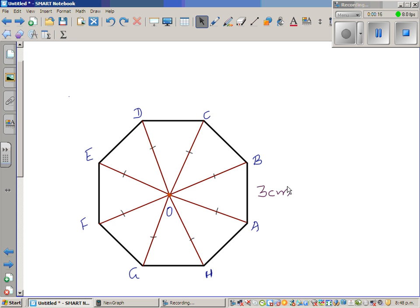So each side is 3 centimeters and you want to find the area of this octagon. So say O is the center of the octagon. Center of the octagon means a point which is equidistant from all the vertices.